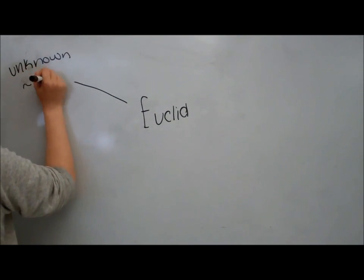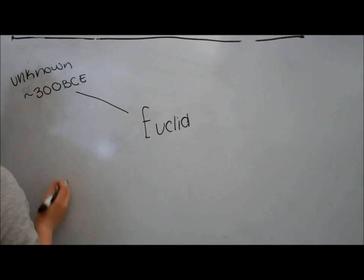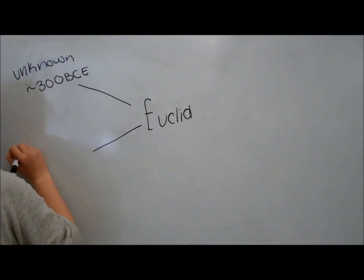We know this thanks to Proclus, a philosopher who lived 800 years after Euclid. He said that Euclid lived after Plato but before Archimedes, which was around 300 BCE.